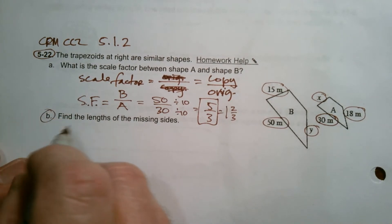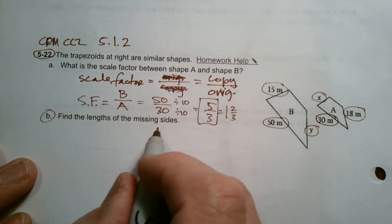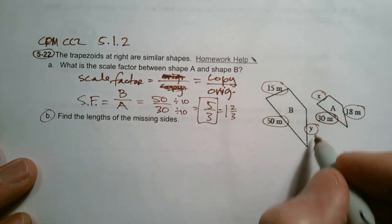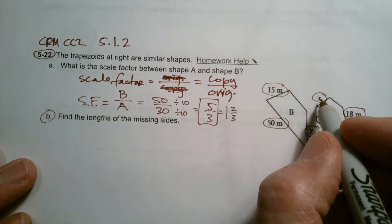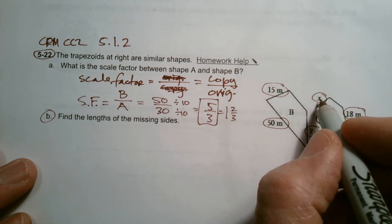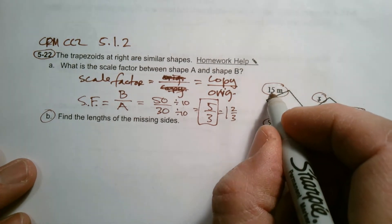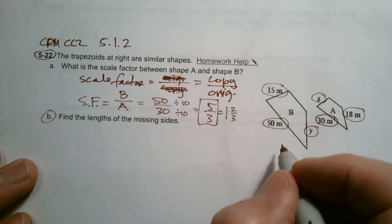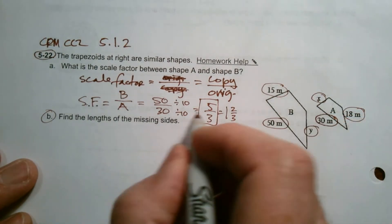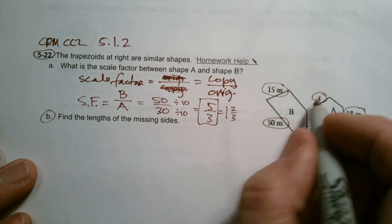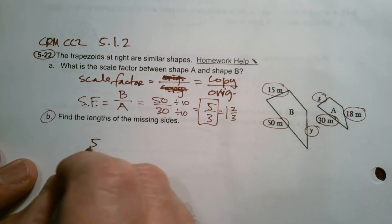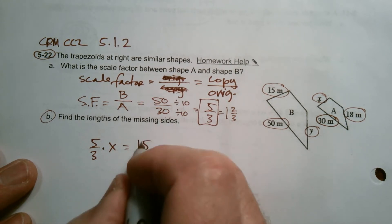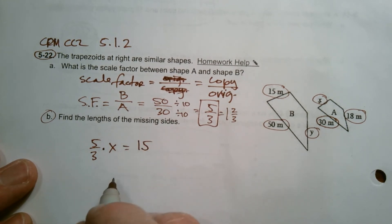So now part B says find the lengths of the missing sides. So I need to figure out what is X, what is Y. If I know I have to take X and multiply it by 5/3 to get 15, I've got to figure out what that number is. Now that I know my scale factor, a couple of things I could do. I could say, take 5/3, multiply it by X, and that should give me my 15. That's one way of looking at it.